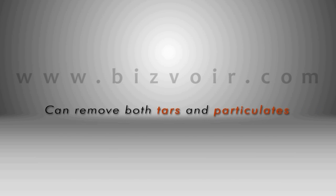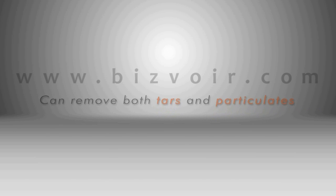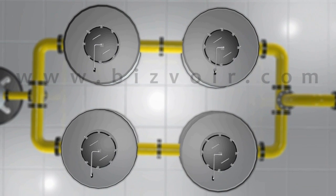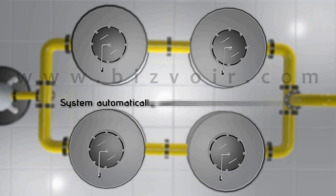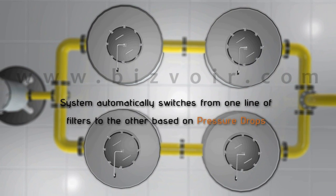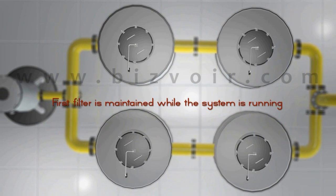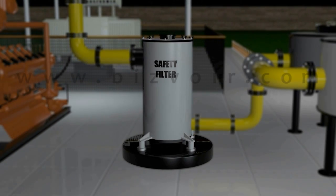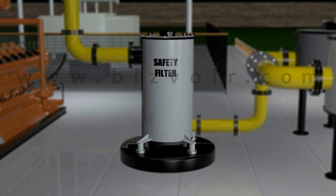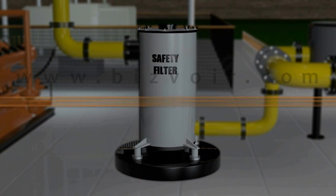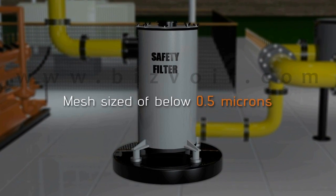This proprietary filtering system is capable of removing both tars and particulates. A parallel line of filters is offered for continuous operation. The system automatically switches from one line of filters to the other based on pressure drops, so the first filter line can be maintained while the system is running. After this there is a fabric filter, also called the check filter, which uses an extremely tough cloth with a mesh size of below 0.5 microns.